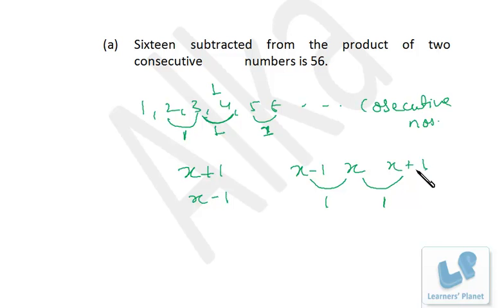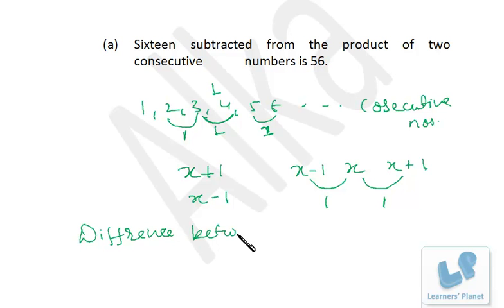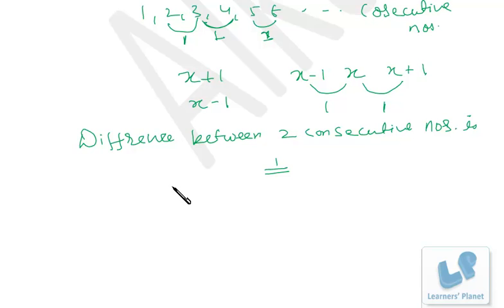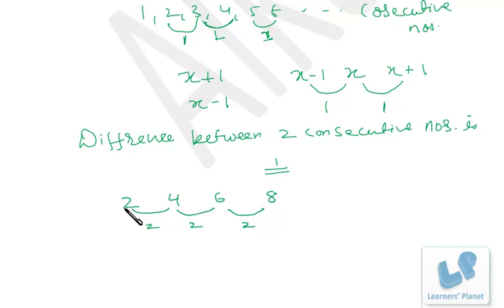If you want a smaller consecutive number, subtract 1; if you want a bigger one, add 1. The difference between two consecutive numbers is always 1. Similarly, for two consecutive even numbers — 2, 4, 6, 8 — the difference is 2. So if one even number is x, the next is x + 2 or x − 2. For consecutive odd numbers — 1, 3, 5, 7 — the difference is also 2. So if one is x, the others are x + 2 and x − 2.